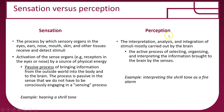Perception, by contrast, is the interpretation, analysis, and integration of stimuli carried out by the brain. We call this an active process because you're selecting, organizing, and interpreting information brought into the brain from the senses. For example, you sense a very shrill tone — that's the sensation part. The perception part is: what is that tone? Is it a fire alarm? A neighbor playing terrible music? That whole process is perception.